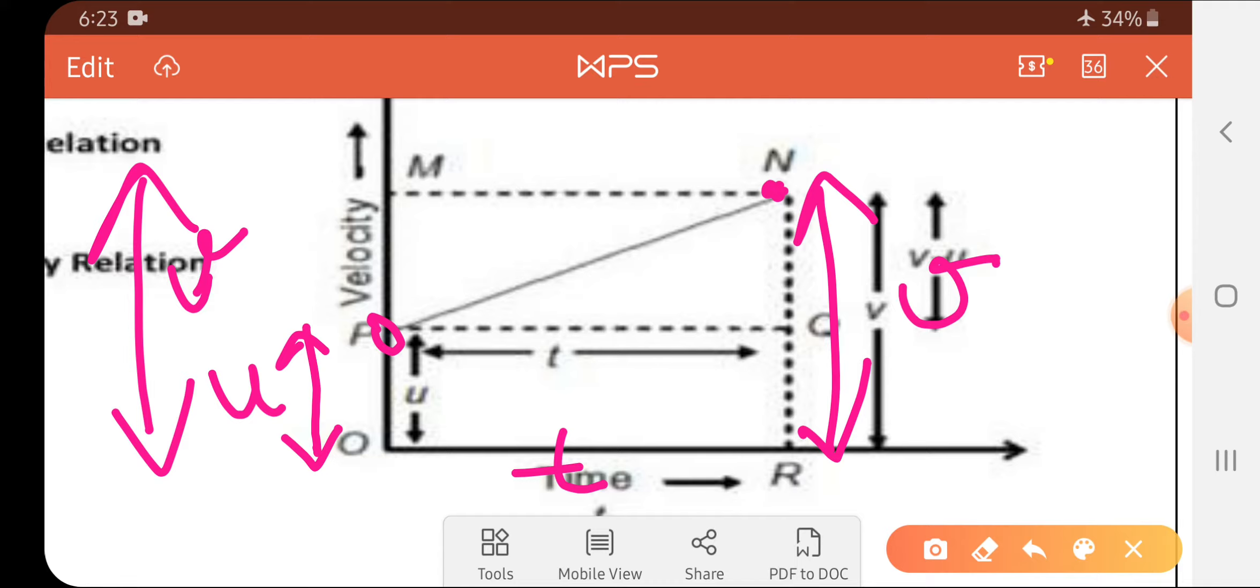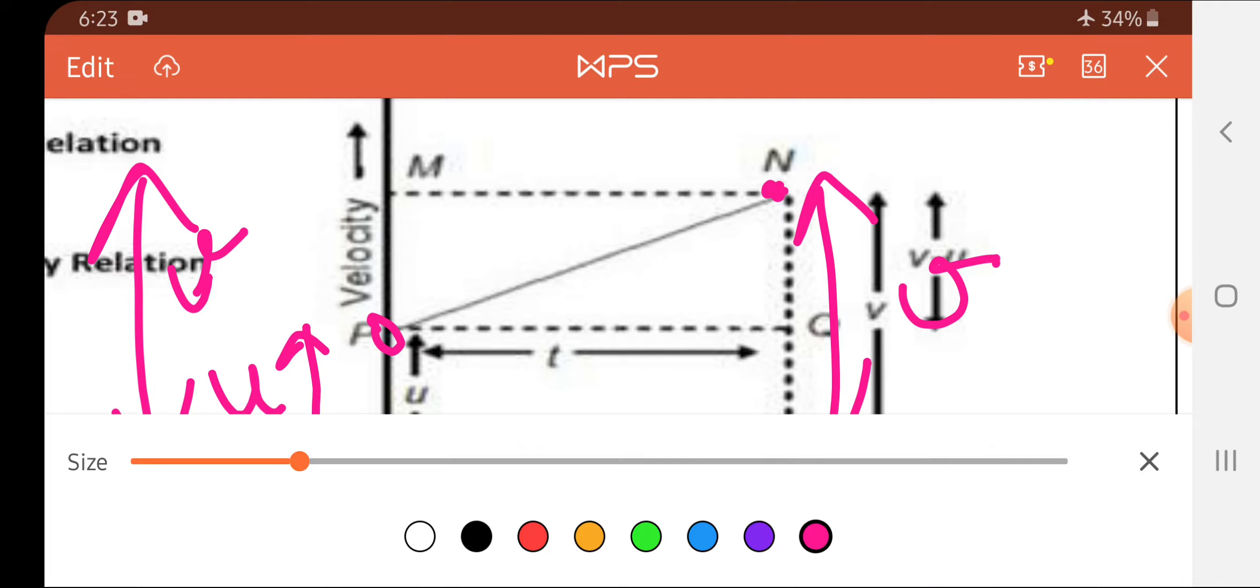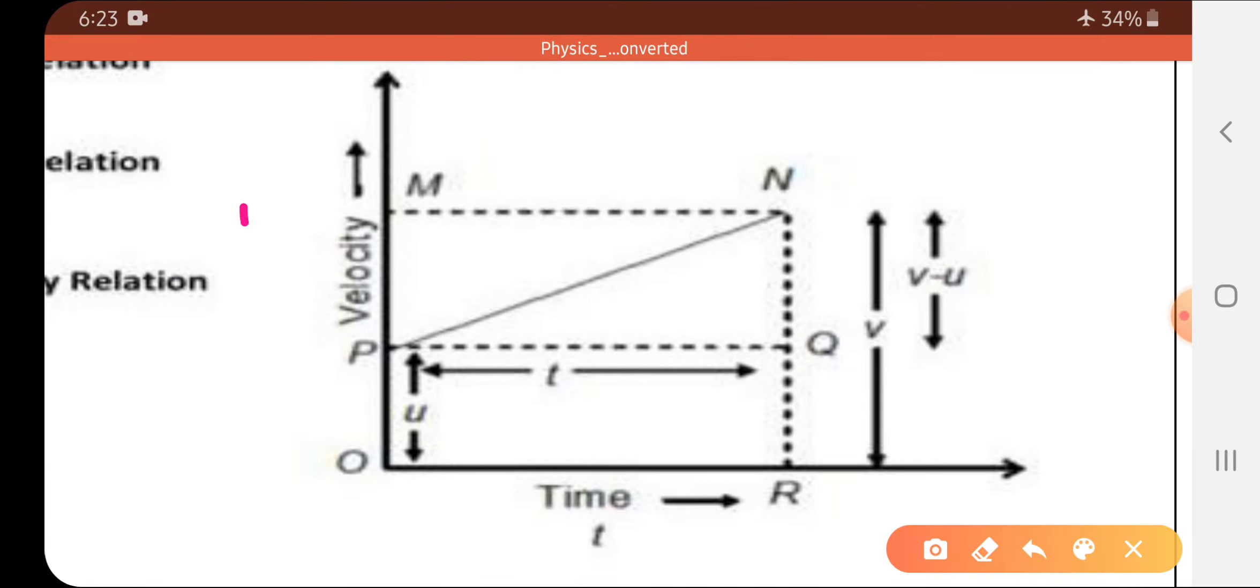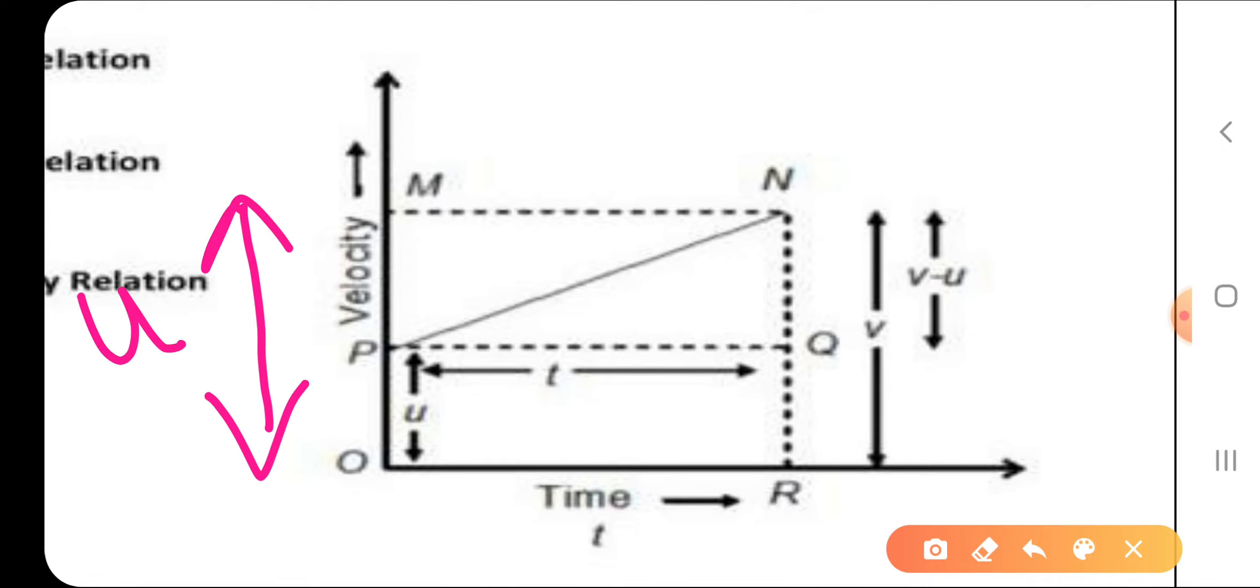Now what we have to do is use this relation. We are representing the final velocity v and the initial velocity u. The time in which initial velocity u changes to v, we have taken as t. Let us proceed to the first equation.